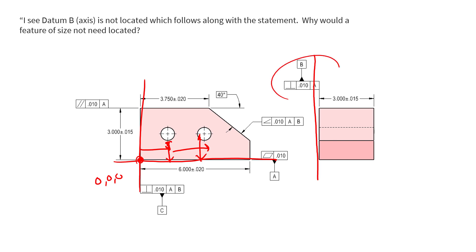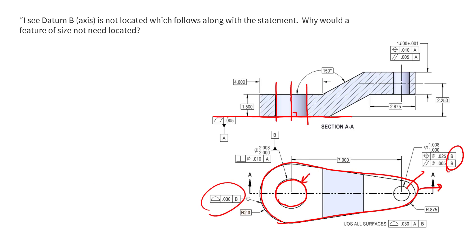So again, we're not locating B or C or A — they just exist, and everything else exists in location relative to them. No different than in this other example, where we're saying datum B, this hole, is the origin. Everything else needs to locate from it; we don't need to locate it because it is the origin. Hopefully that helps clarify things. Primary, secondary, and tertiary datum features don't have to be located, and oftentimes they won't be, because we're setting up a reference point for everything else to be located to.